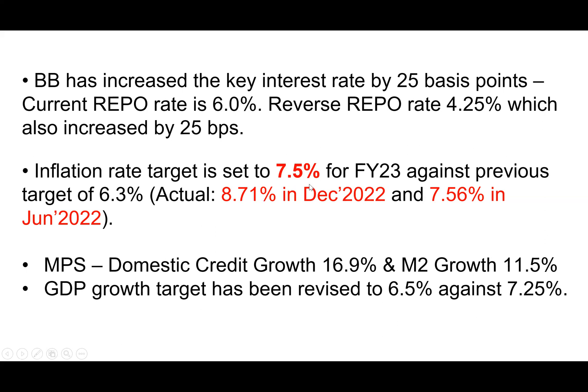Maintaining 7.5% inflation will be a reasonable target for our economy — that is our advantage. Domestic credit growth is set at 16.9% and GDP growth is targeted at 6.5%.